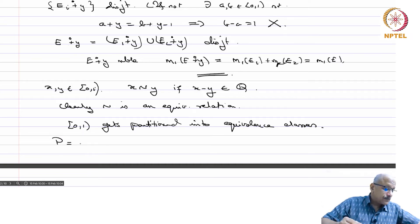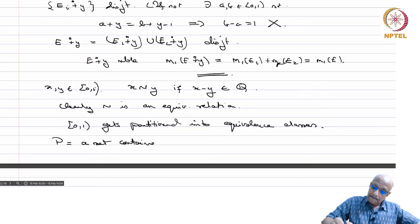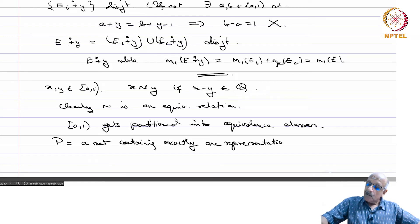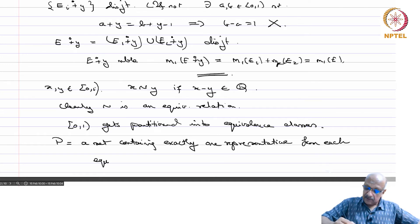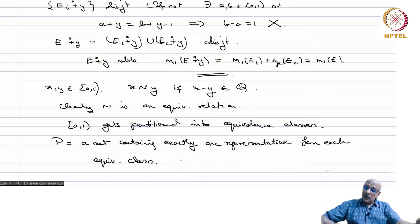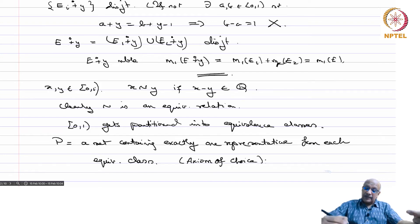Let P be a set containing exactly one representative from each equivalence class. So [0,1) is partitioned as a disjoint union of equivalence classes and we take one representative from each. This is based on the axiom of choice — the ability to find such a set is precisely the statement of the axiom of choice.